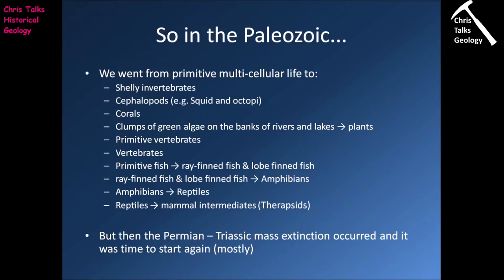In terms of fish, we see relatively primitive groups like the ostracoderms, eventually giving rise to two important groups: the ray-finned fish and the lobe-finned fish. The ray-finned fish account for a substantial portion of all fish species today, while the lobe-finned fish are important because amphibians evolved from them. The amphibians then moved onto land, giving rise to the reptiles, and by the end of the Paleozoic we see the appearance of a mammal-like reptilian group called the therapsids, which eventually gave rise to the mammals.